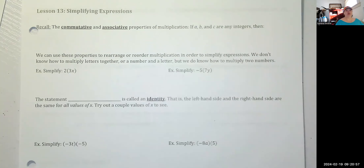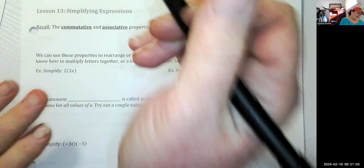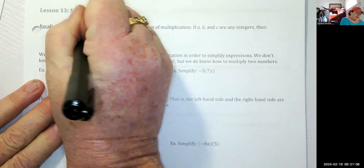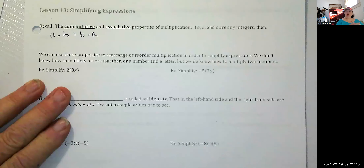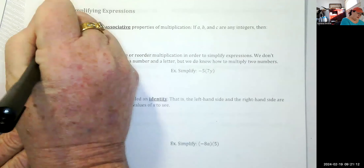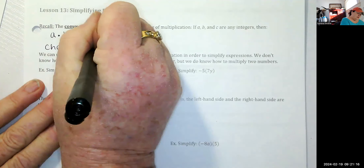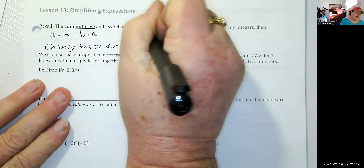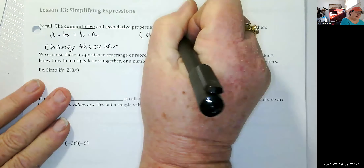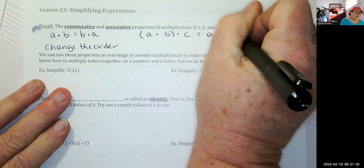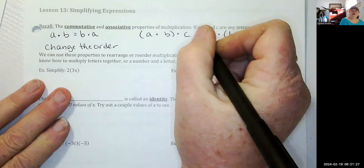Recall the commutative and associative properties of multiplication. If A, B, and C are any integers, then A times B is equal to B times A — that means you can change the order. Also, A times B times C is equal to A times B times C — you can change the grouping.